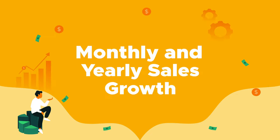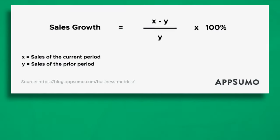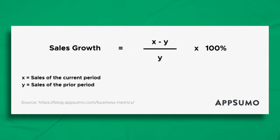Number 10: Tracking monthly and yearly sales growth will help you check if your business's revenue is actually growing. To calculate monthly sales growth, subtract month 2's total sales revenue from month 1's total sales revenue, then divide by month 1's revenue and multiply by 100.